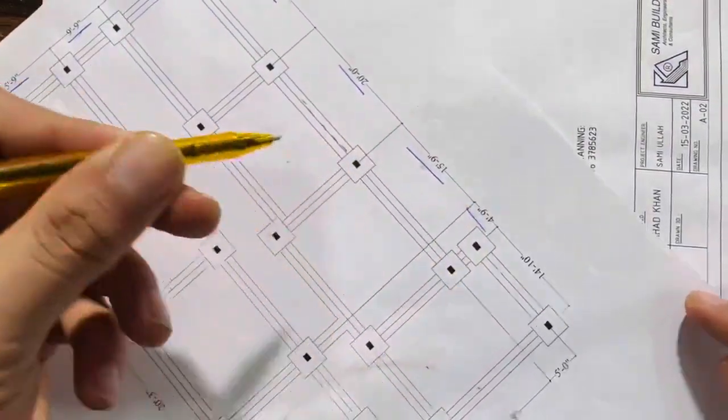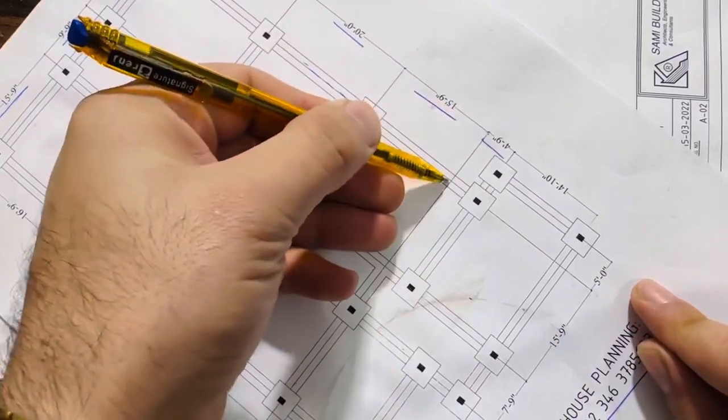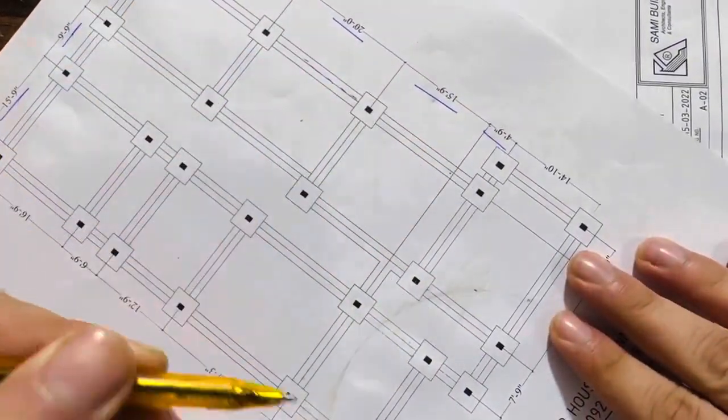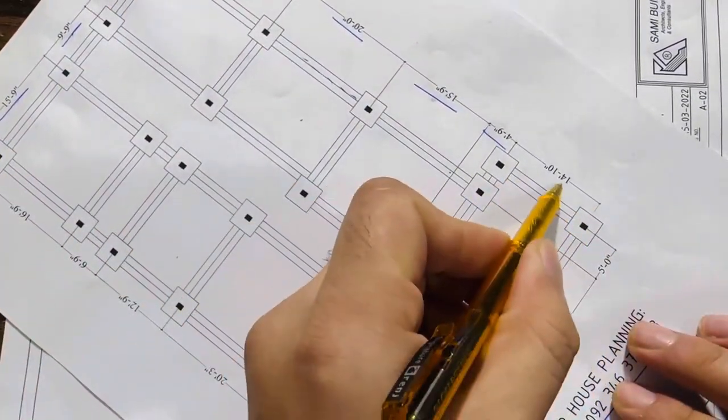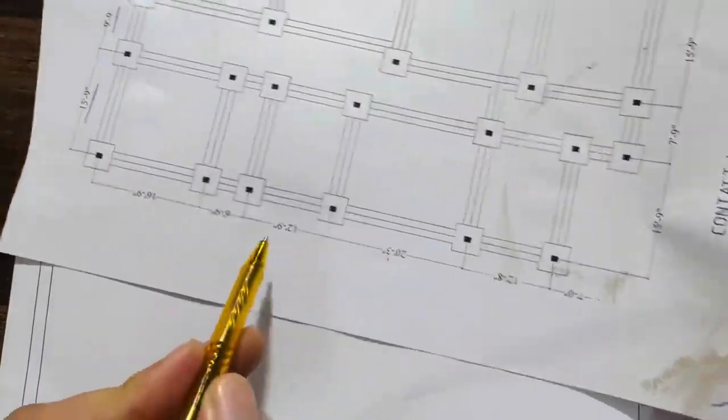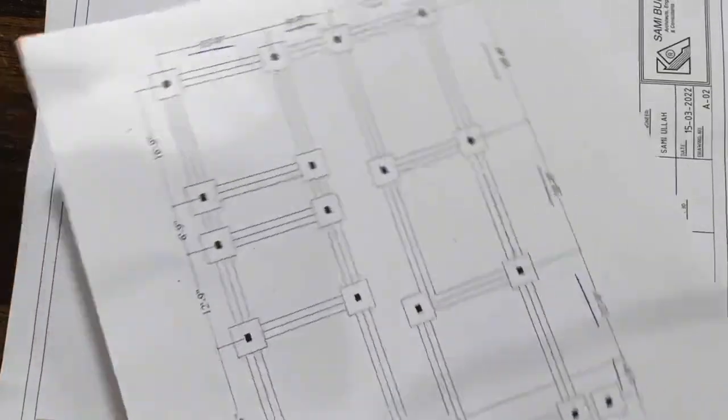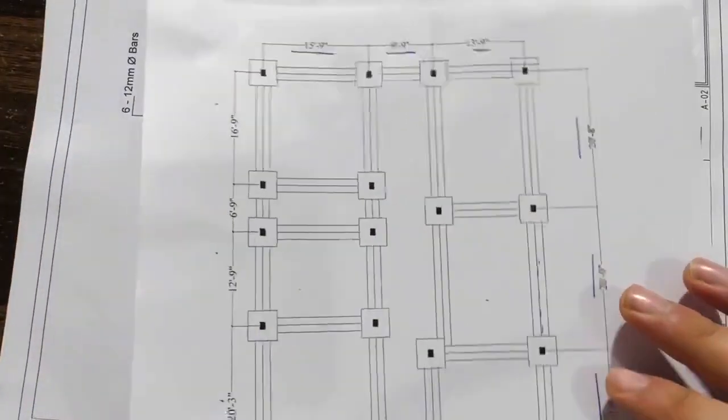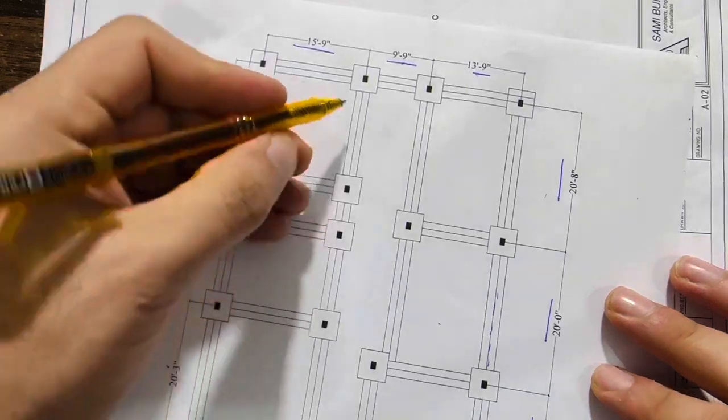4 feet 9 inches, but here we don't have any column, this is just by center line method. Next, you can see the span between two columns is 14 feet and 10 inches. You can see on the other side similar dimensions. Every column is connected by a strip.